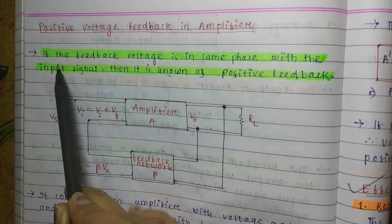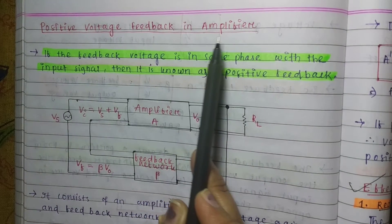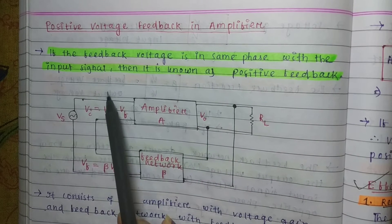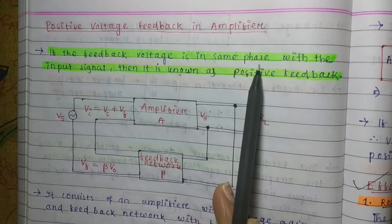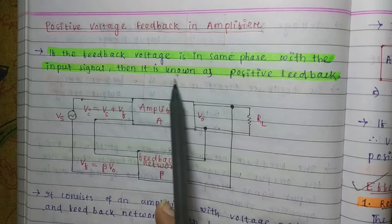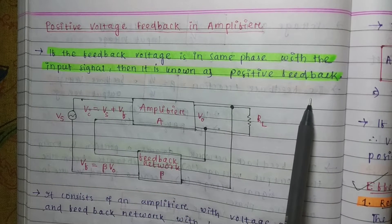Positive voltage feedback in amplifier. If the feedback voltage is in same phase with the input signal, then it is known as positive feedback.